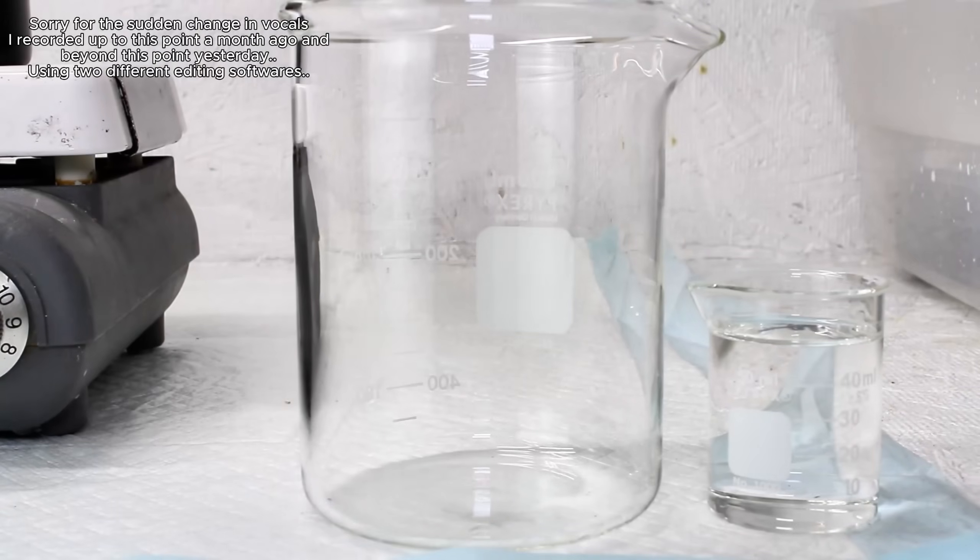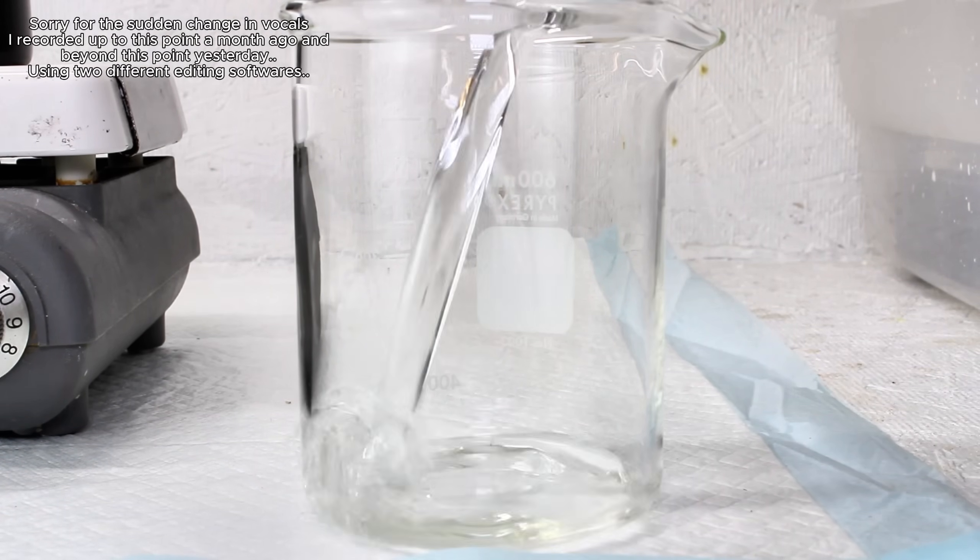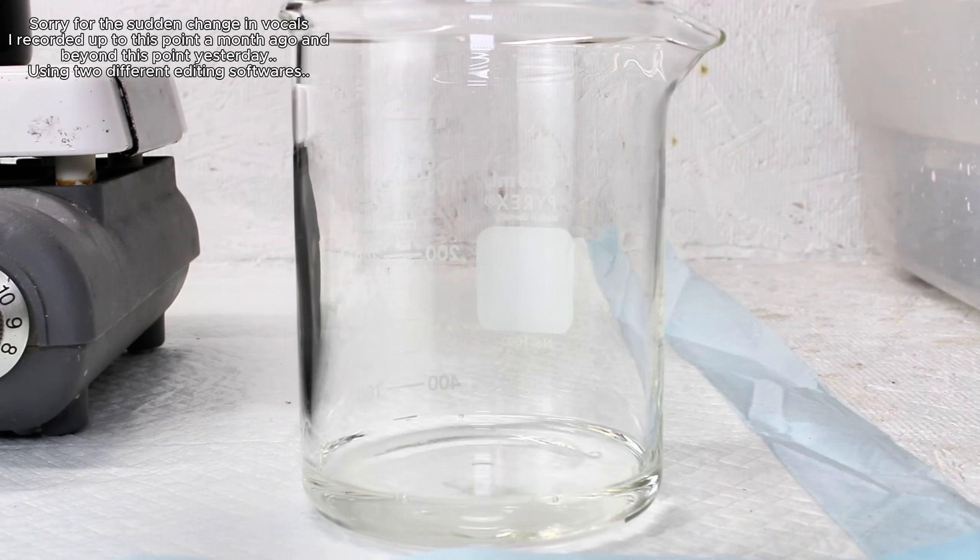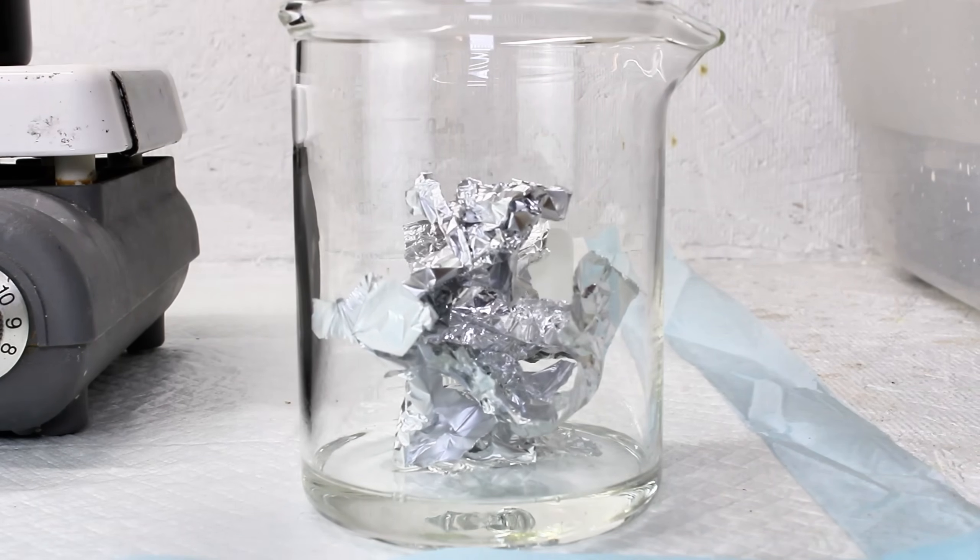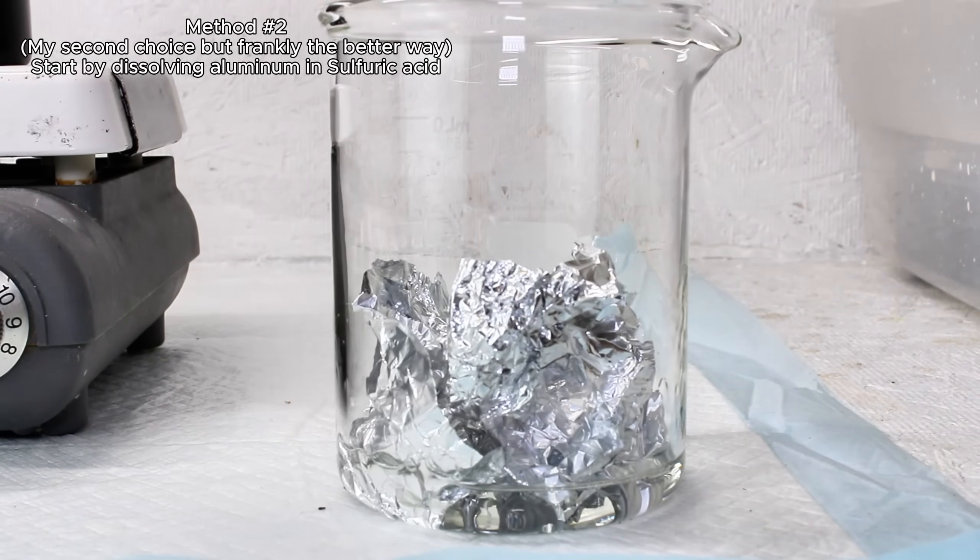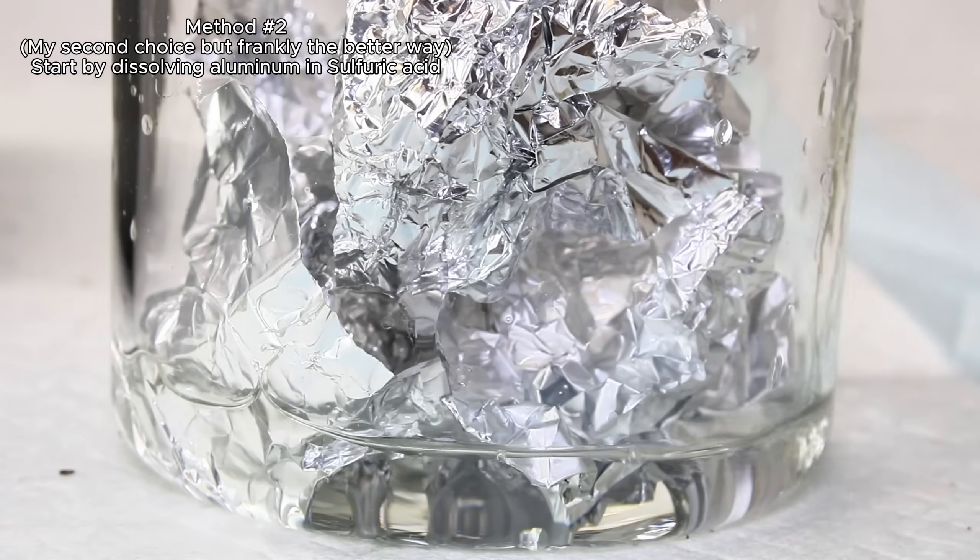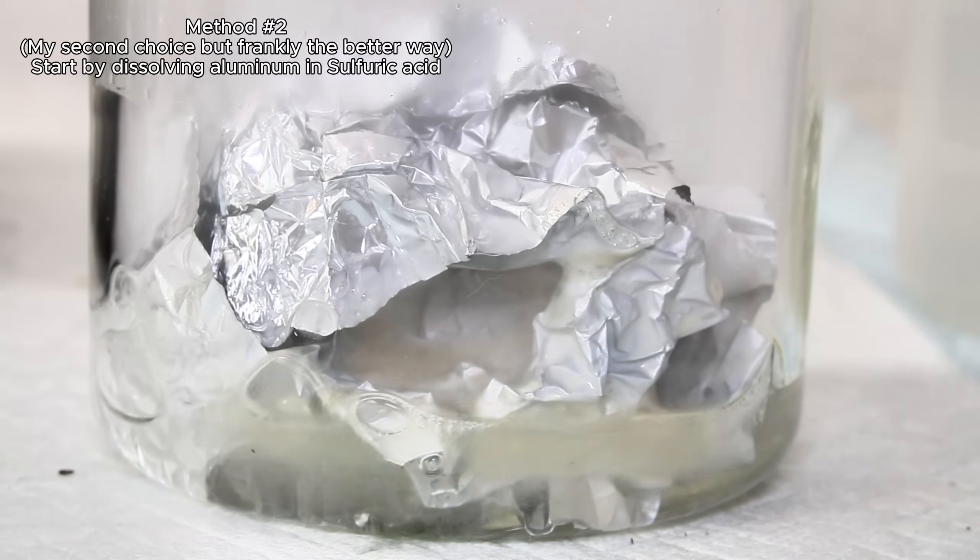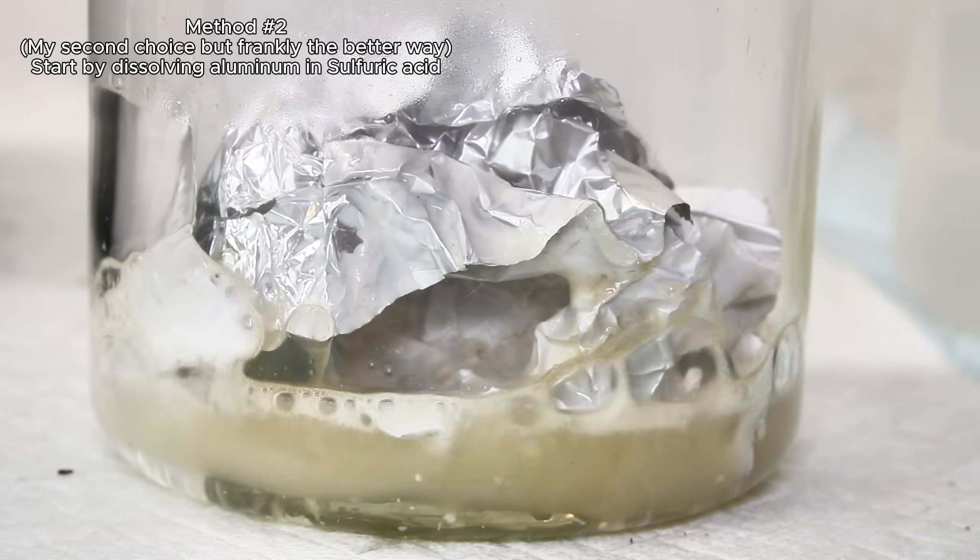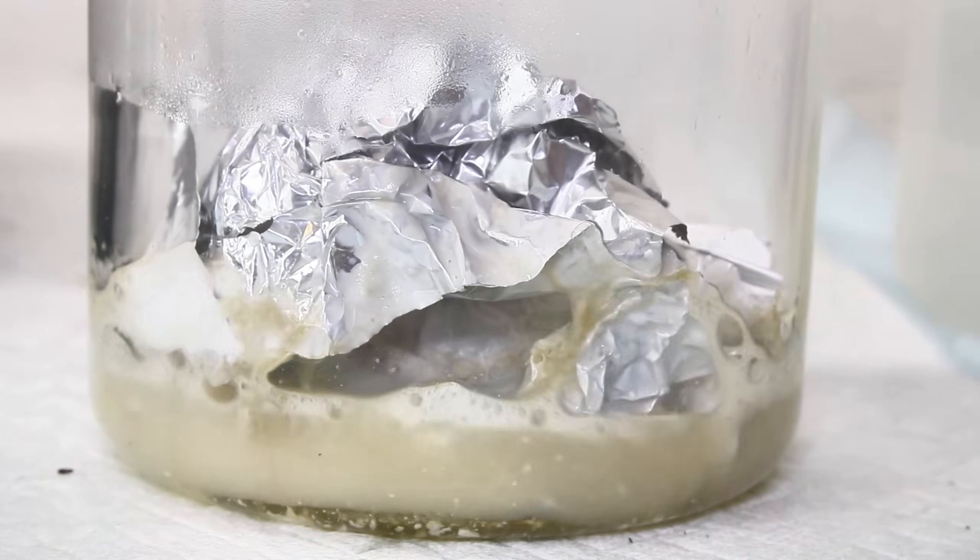Now my original plan was to end this video here, but I went back and tried this process again but in reverse, dissolving the aluminum first in sulfuric acid and then a subsequent neutralization with potassium hydroxide. I didn't think this process would result in a pure final product due to all the nasty byproducts produced when sulfuric acid dissolves aluminum foil, but it actually cleaned up surprisingly nicely and was honestly easier than my first method.